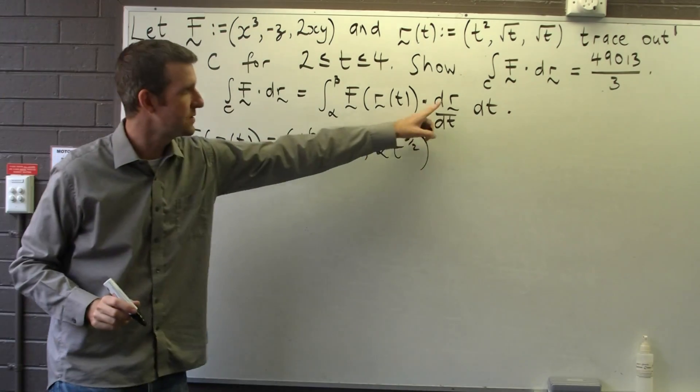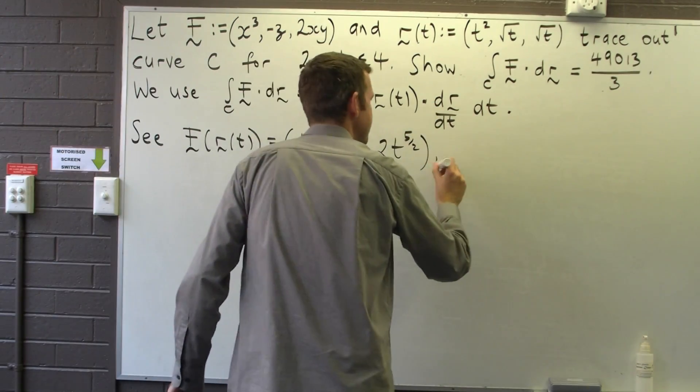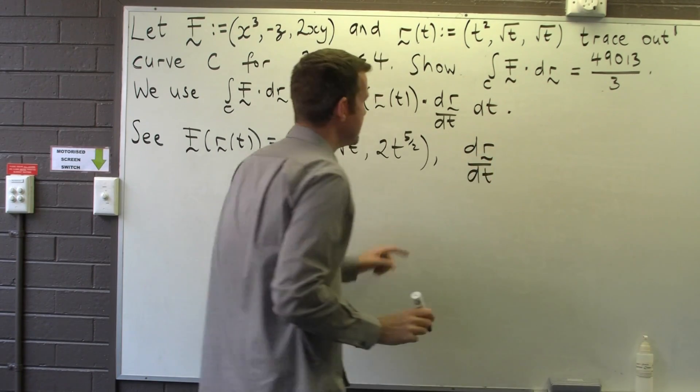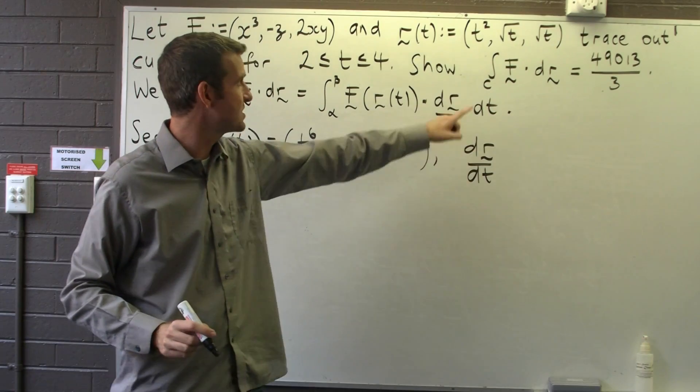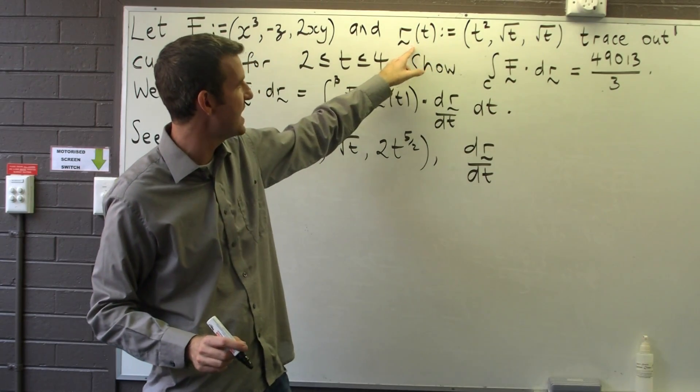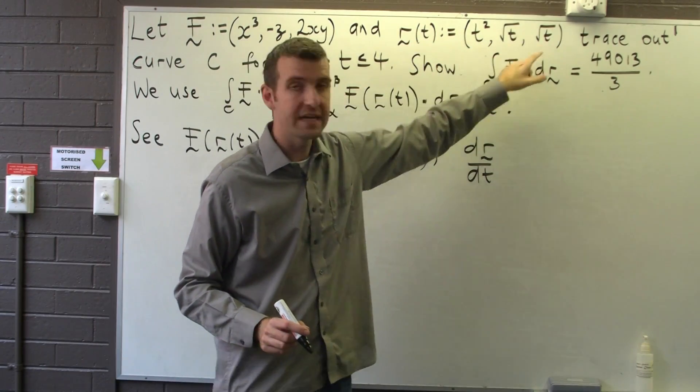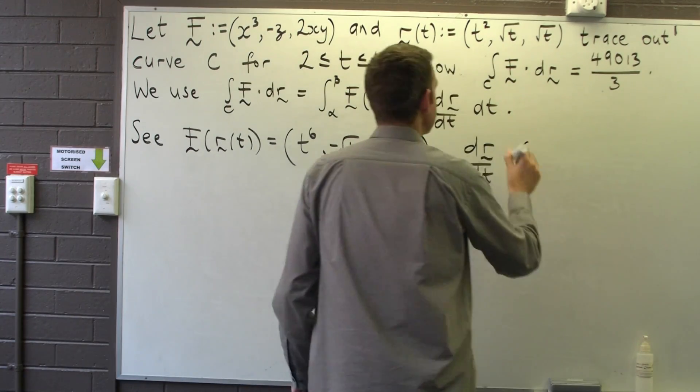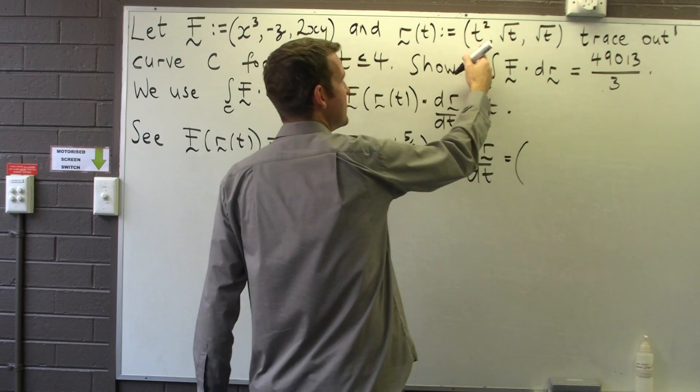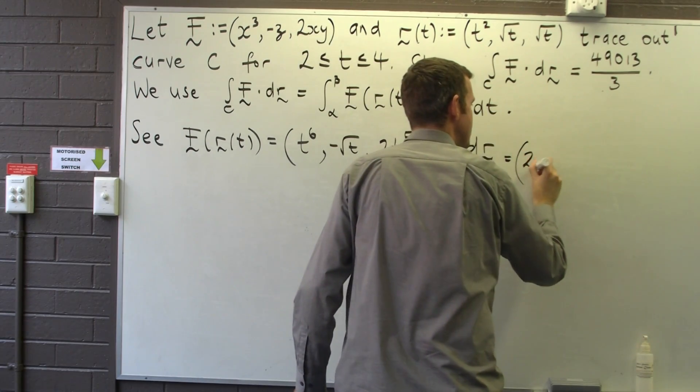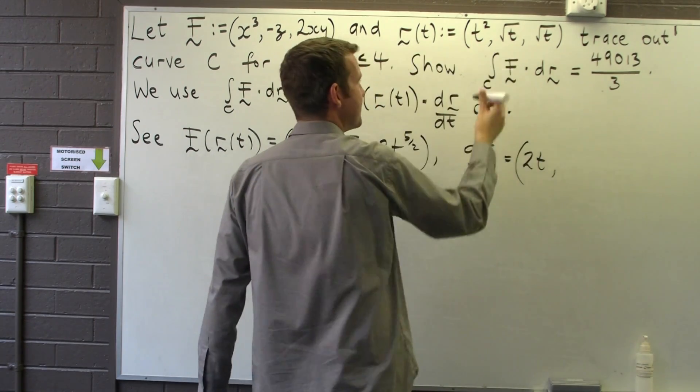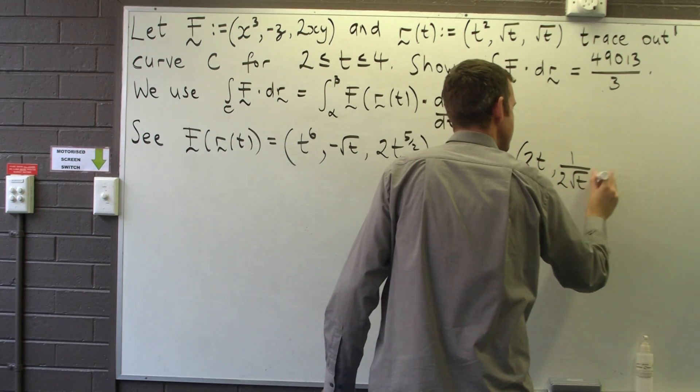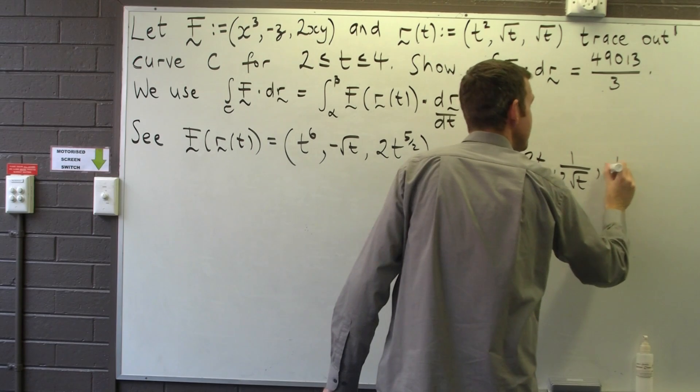What else do we need? We need dr/dt. dr/dt is calculated by just going to our parameterization r, differentiating each component with respect to t. So the derivative of t squared is just 2t, derivative of root t is one on 2 root t, and the same for the third component.